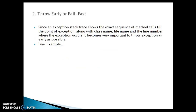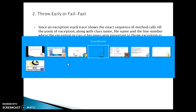Since an exception stack trace shows the exact sequence of method calls up to the point of exception, along with the class name, file name, and line number where the exception occurs, it becomes very important to throw the exception as early as possible. When you print a stack trace, it prints the entire information: the class name, the Java file name, the line number, etc. To understand this point, I will take help of an example I have written.